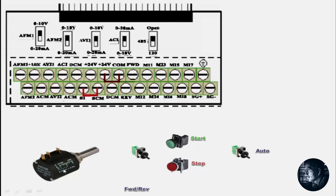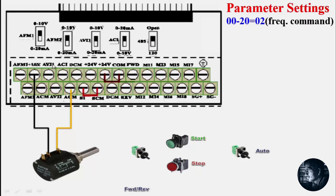First let's see the potentiometer wiring. On the potentiometer, the arrow marks the analog output, and pins 1 and 3 are the 0V and 10V power supply. We connect 10V to 10V and 0V to ACM (analog command). The analog output is connected to AVI, the analog voltage input.